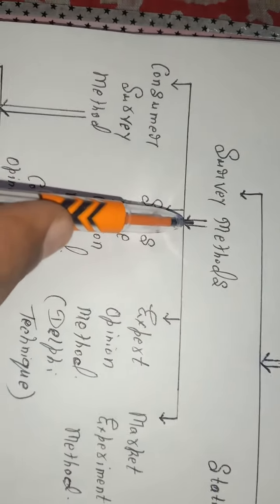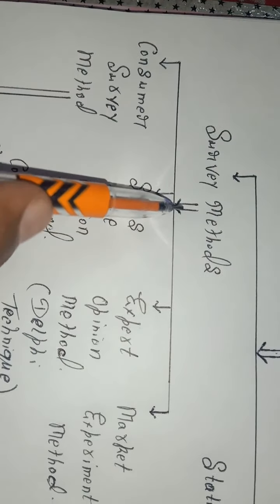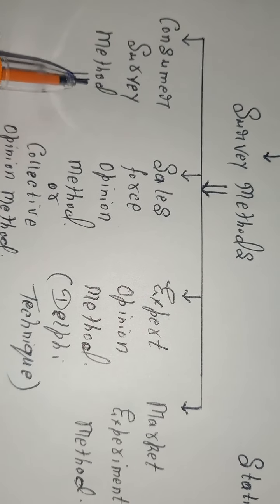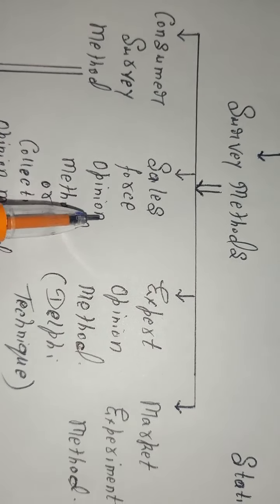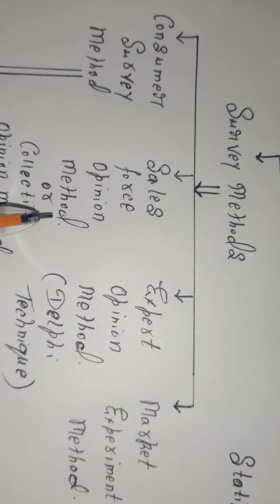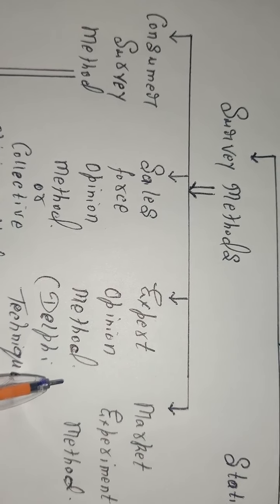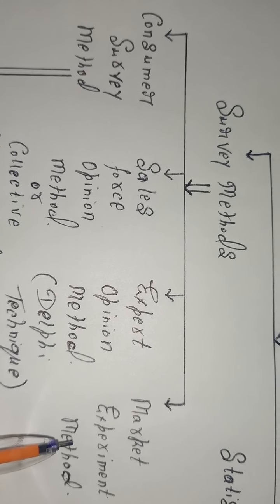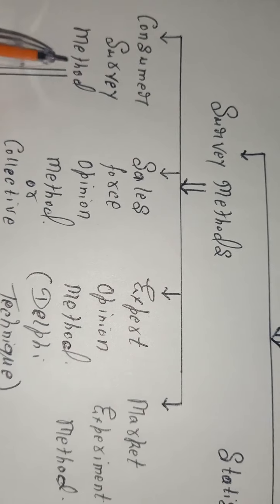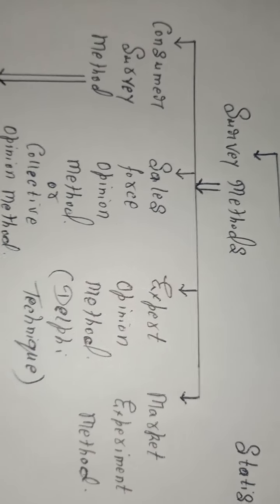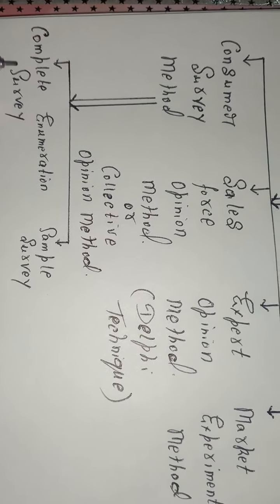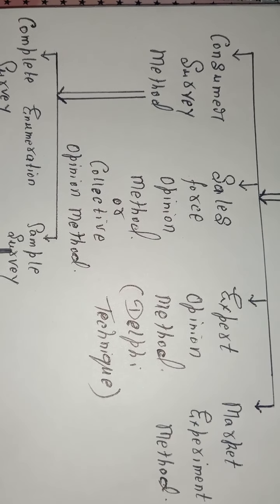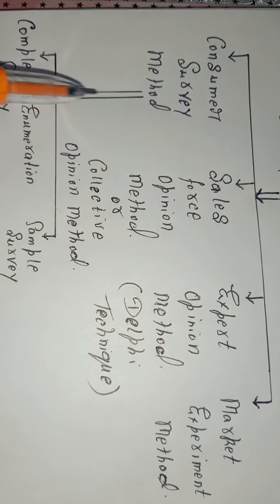Under survey methods, there are four parts. The first is the consumer survey method. The second is the sales force opinion method or collective opinion method. The third is the expert opinion method, also known as the Delphi technique. The fourth is the market experiment method. The consumer survey method is of two types: complete enumeration survey and sample survey.